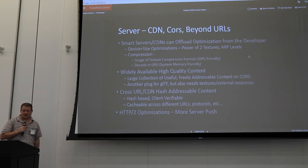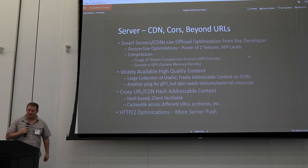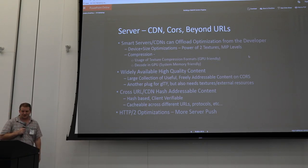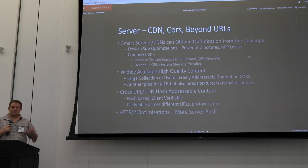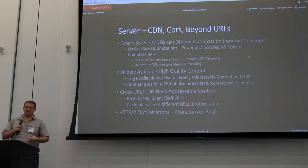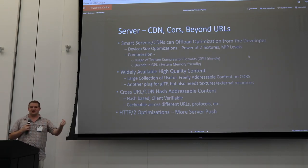For the server, there's a lot to think about: CDN, CORS, and beyond URLs. Smart servers and CDNs can offload a bunch of the optimization from the developer — I should be able to upload content and the server should handle device and size optimizations, like powers-of-two textures and MIP levels depending on the device retrieving it. We can also do some compression in the cloud. Image compression is to download and maintain image quality, while texture compression is for upload into the GPU. Ideally, we'd be getting more compressed textures down and fewer images.